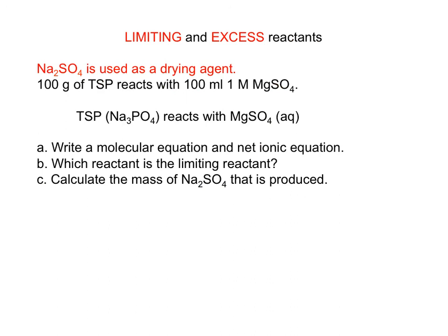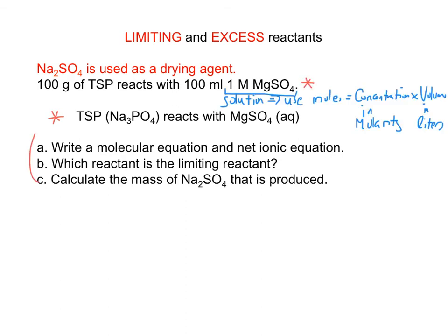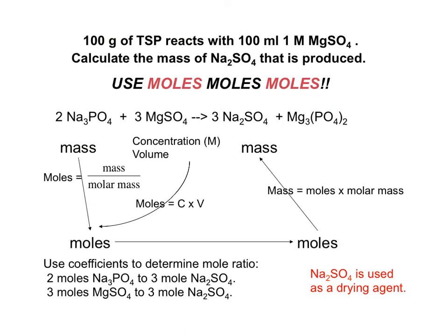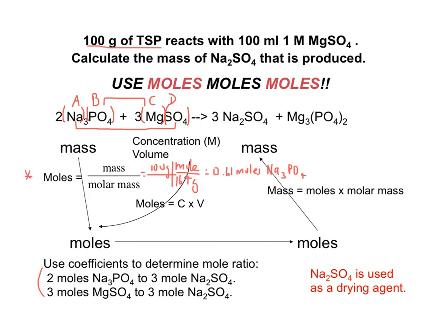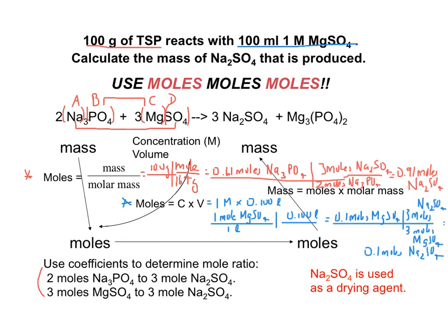Let's put it all together. Stop the video, predict the product of this reaction, and do this calculation. We have a double replacement reaction and here are the products — the equation is balanced. Here are the mole ratios. We want to determine the limiting reactant, so let's calculate the moles of each reactant. We're given 100 grams of TSP (sodium phosphate), and 100 milliliters of 1 molar magnesium sulfate solution. Magnesium sulfate limits the amount of sodium sulfate produced, so we use this formula to calculate the mass of sodium sulfate produced.